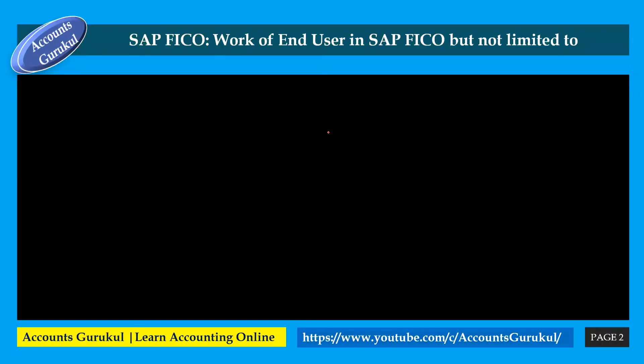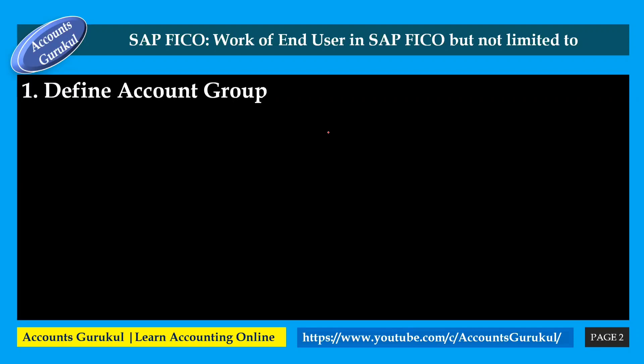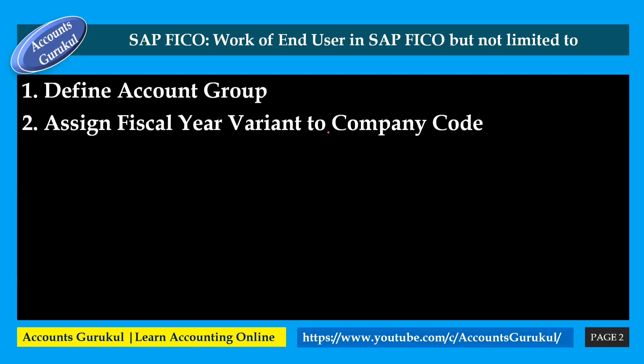So, the SAP FICO end user knowledge list — but not limited to: First, define account group. You should know how the account group is going to be defined in the system. This is not necessarily your direct responsibility, but you should know it because it is technical. You should know how account codes are defined in SAP. Second, assign fiscal year variant to company code.